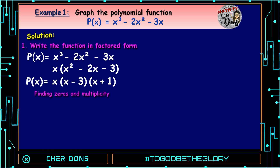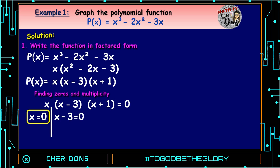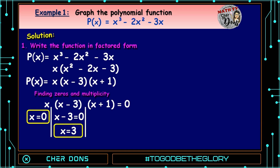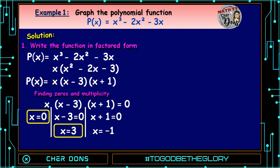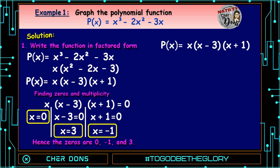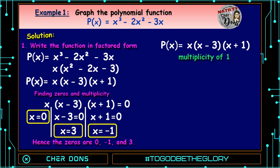Finding zeros and multiplicity — equate to 0. So x = 0 is our first zero. Then x - 3 = 0 gives x = 3. And x + 1 = 0 gives x = -1. Hence our zeros are 0, -1, and 3. As you can see, the factors don't have a degree more than 1, so their multiplicity is equal to 1. Therefore, the graph will cross the x-axis.